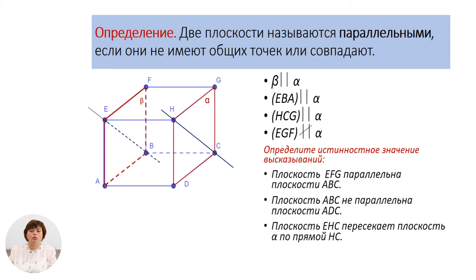Попробуем определить, истинно или ложно следующее высказывание: плоскость ЕФГ параллельна плоскости АВС. Плоскость АВС не параллельна плоскости АДС. И плоскость ЕХС пересекает плоскость α по прямой HC. Это у нас истинное значение.